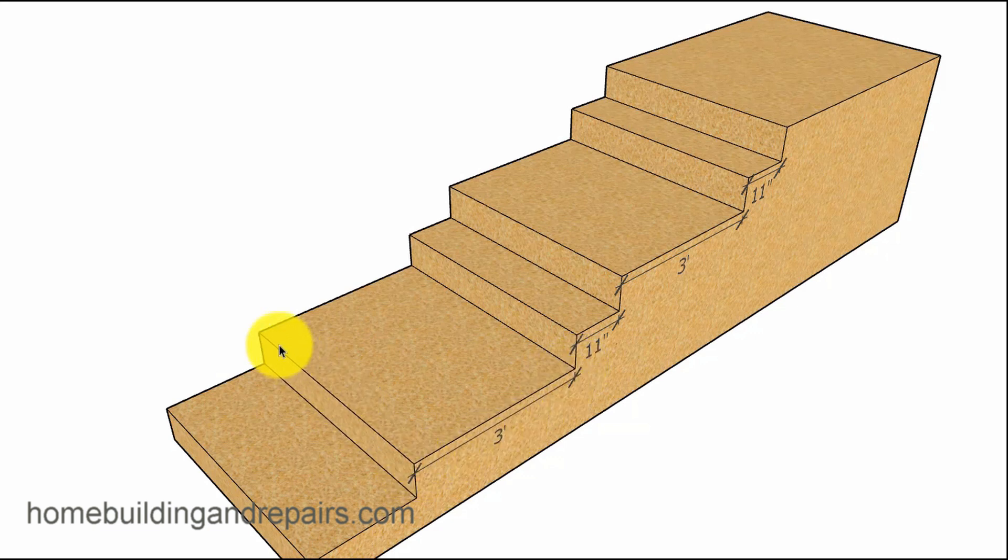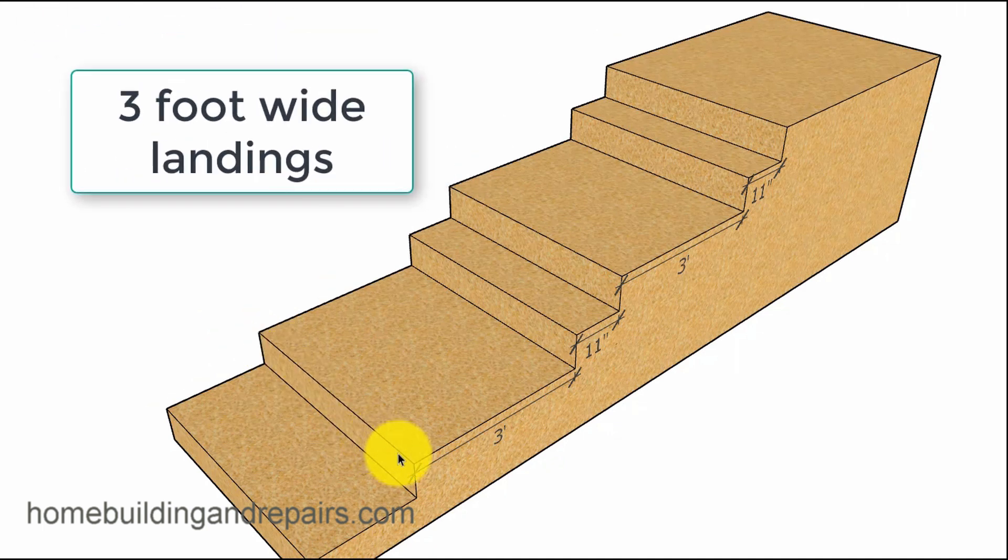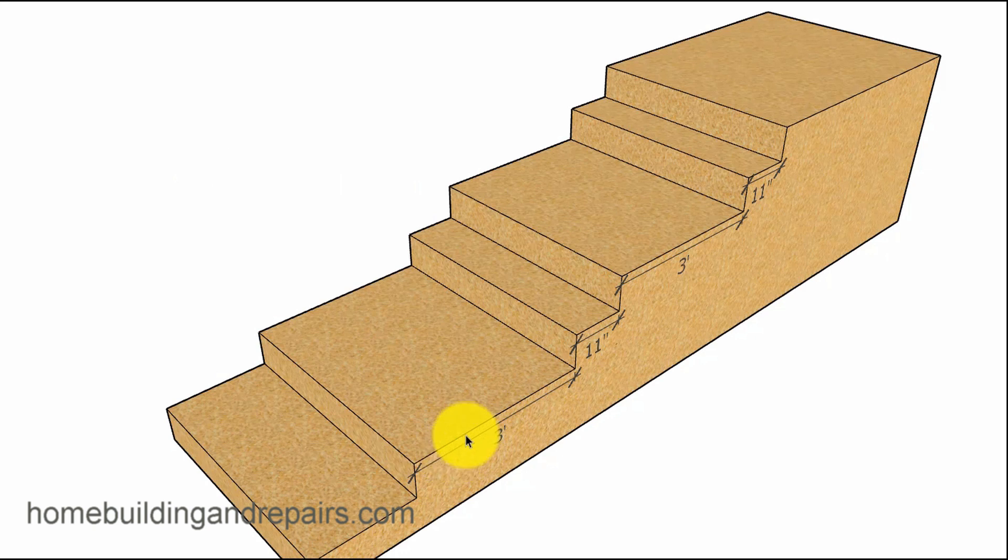The width of the stairway also needs to be 3 foot as a minimum. It can be larger just can't be smaller than 3 foot. Now when we put a landing in here we have a landing then a step then another landing then another step and then up to your platform or your floor. This shouldn't be a problem with the building department because you're using a landing.